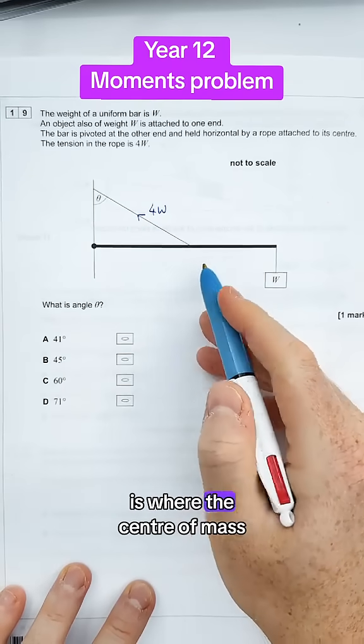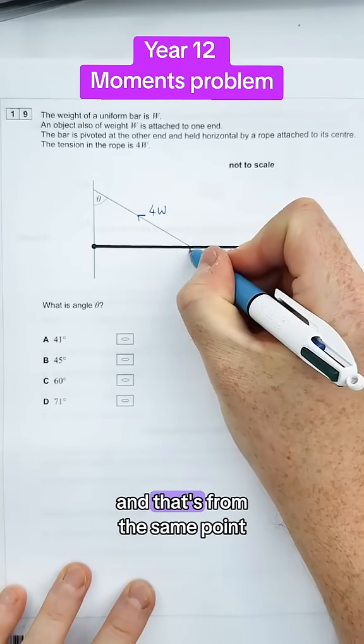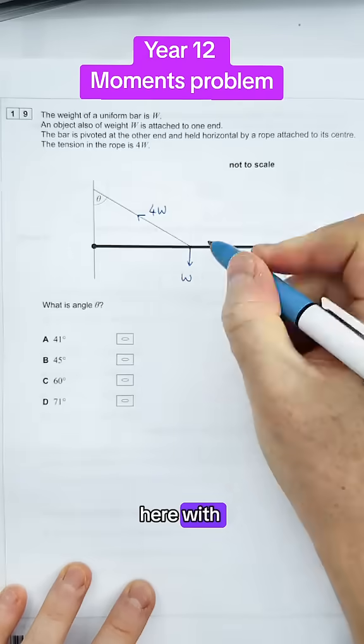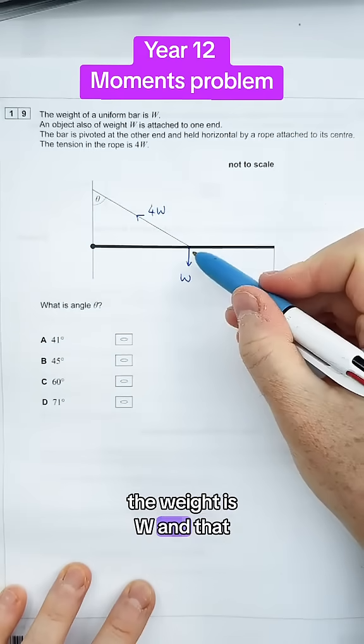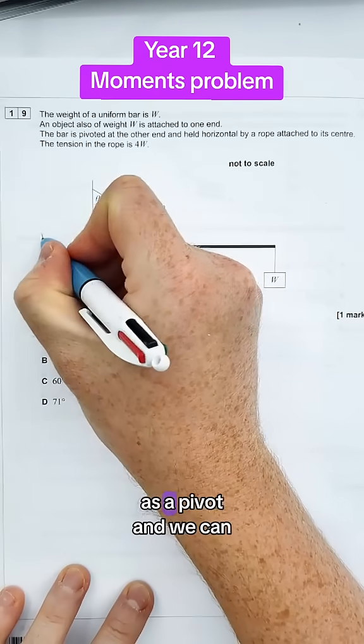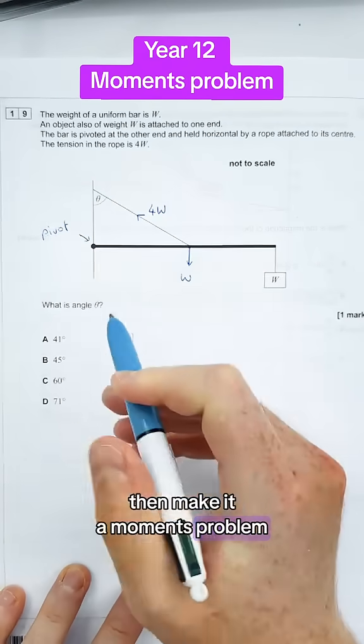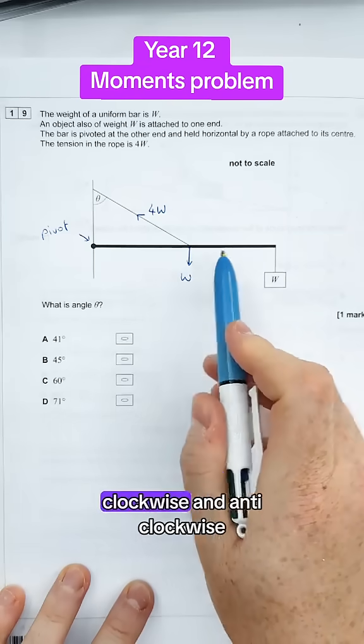The one thing they haven't labelled on is where the centre of mass of the bar acts, and that's from the same point here with the weight W, and that goes half the way along the bar. Now, if we treat this end as a pivot, we can then make it a moments problem, because we've got moments going clockwise and anticlockwise.